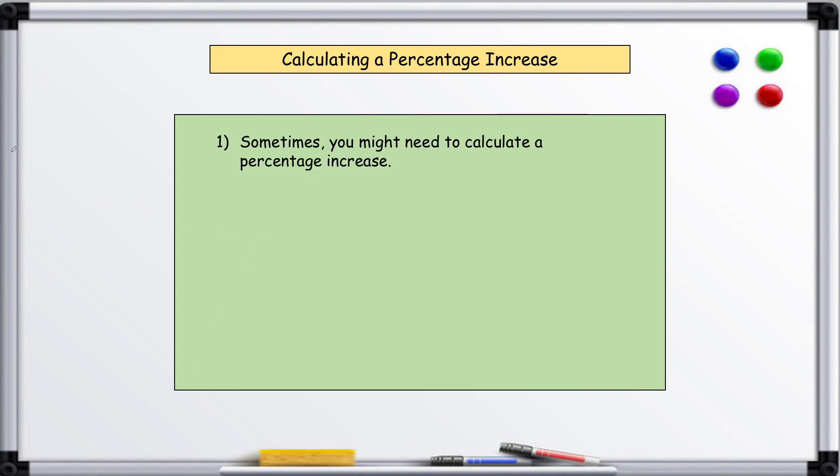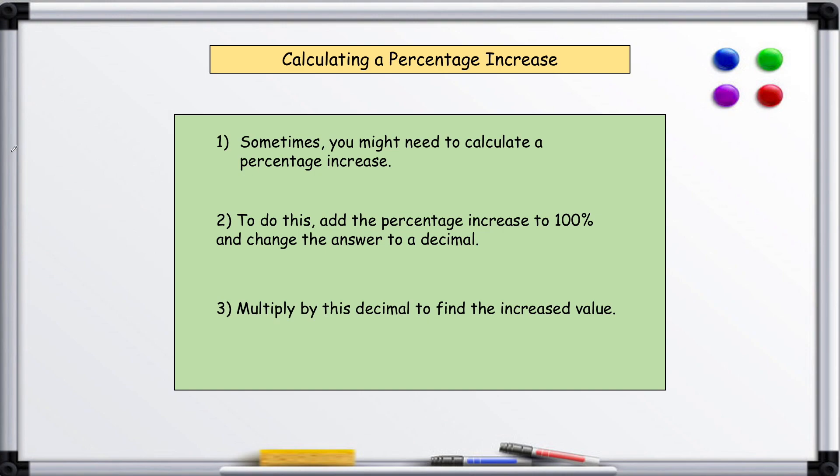Sometimes you might need to calculate a percentage increase. To do this, add the percentage increase to 100% and change the answer to a decimal, which means you divide it by 100. Then multiply this decimal to find the increased value. Now it sounds a bit complicated, but we'll see in the example how easy this is.